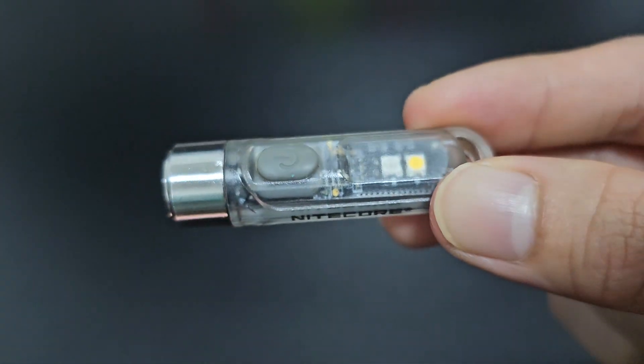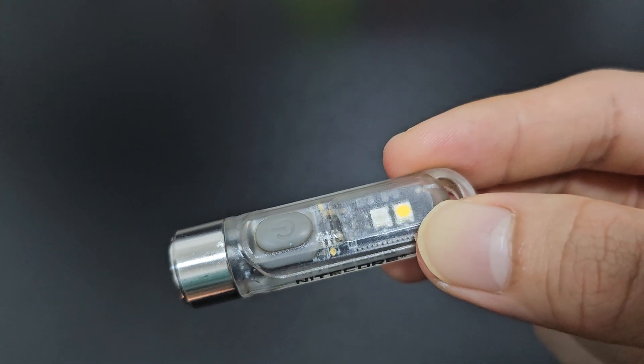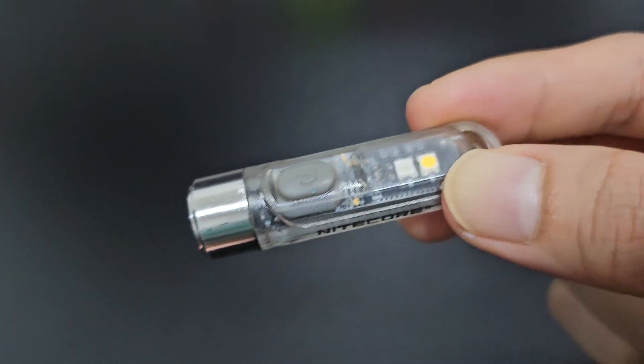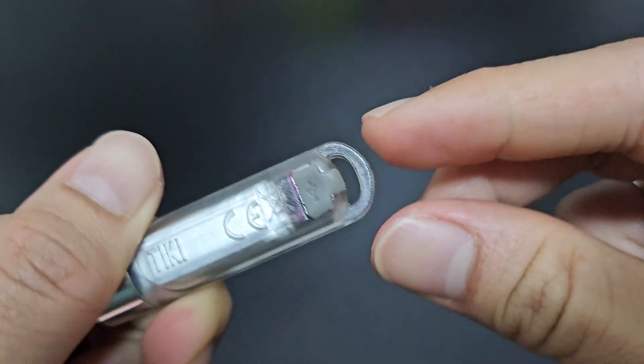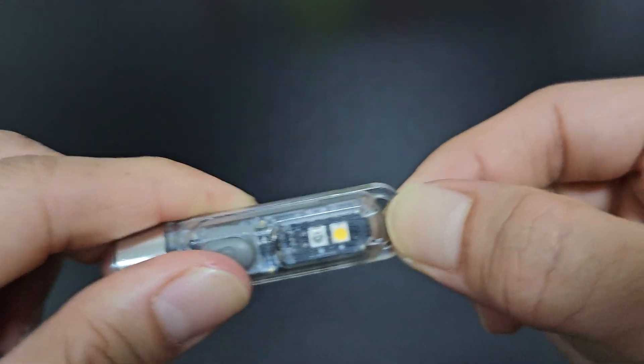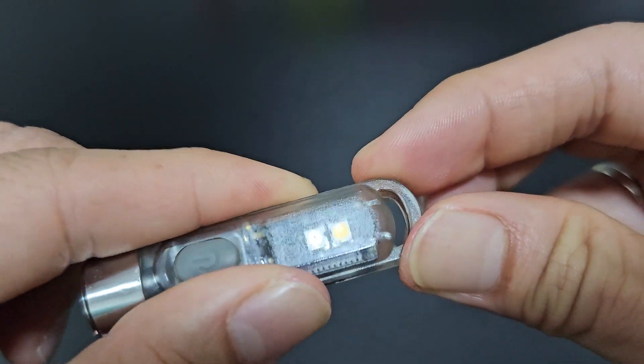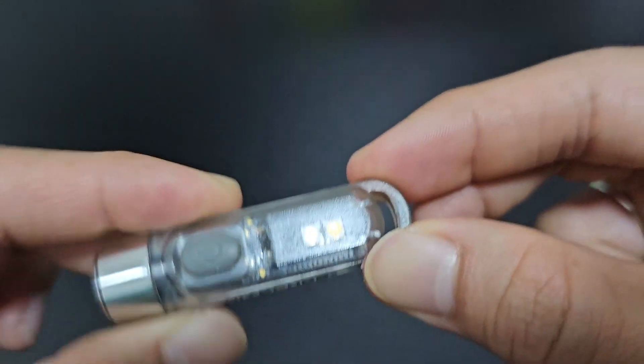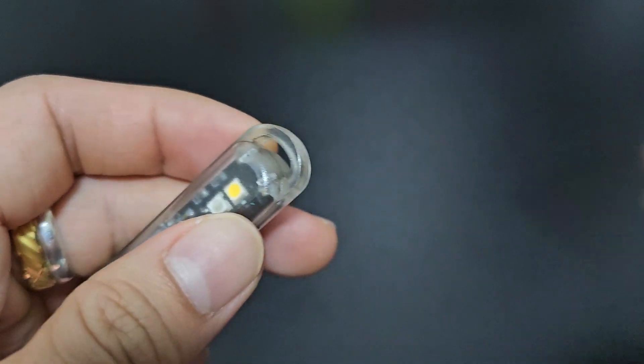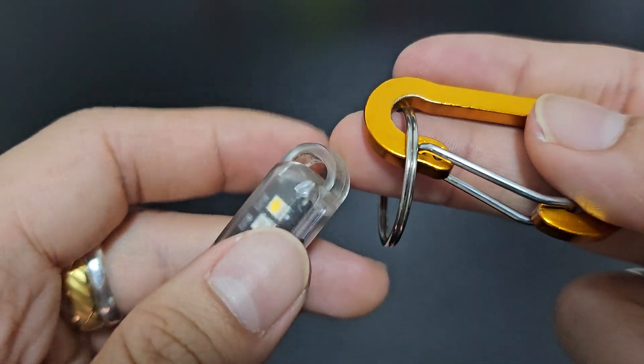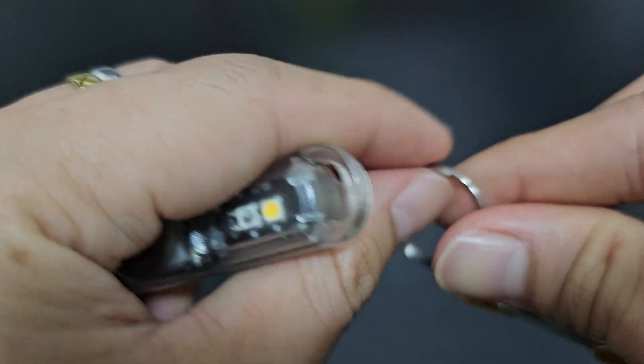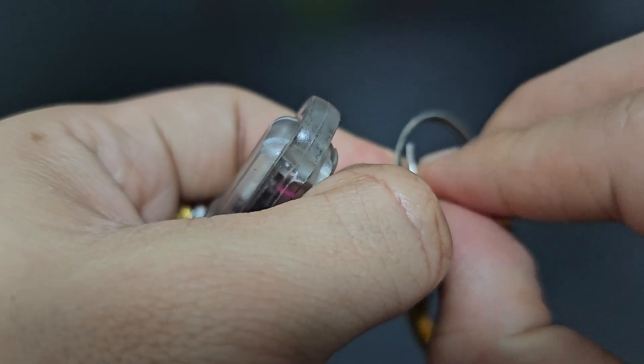Lastly, I want to show you this plastic ring over here. As claimed by Nitecore, it's able to withstand up to 30kg. I'm not sure about that, haven't tried that before, but what I like to do is to attach a metal ring at the back of this plastic ring over here with a carabiner.